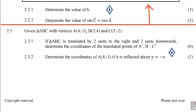Given triangle ABC with vertices A, B, and C. Question 2.3.1: if ABC is translated — that is a transformation — by two units to the right, so that is along the x-axis, and two units downwards, that is along the y-axis, determine the coordinates of the translated points A1, B1, C1.